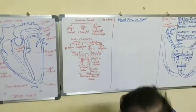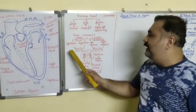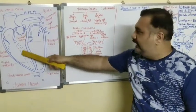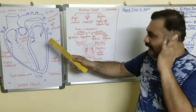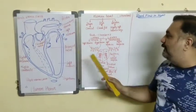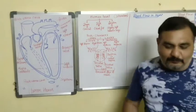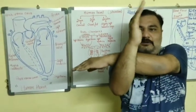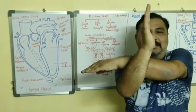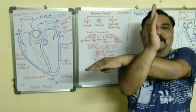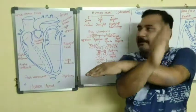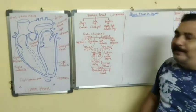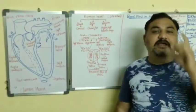Regarding the septa: the left atrium and right atrium are side by side, so their walls are thin. The atria partition walls are thin, whereas the ventricles partition walls are thick.